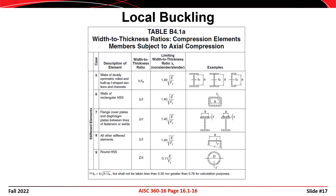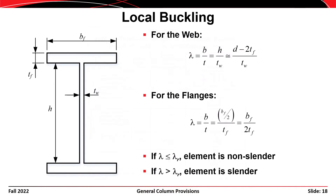The second half of the table gives lambda sub r limits for stiffened elements. For the web of an I-shape, lambda sub r is 1.49 times the square root of E divided by F sub y. We calculate lambda for each element, compare it to the limiting value from Table B4.1, and if non-slender we don't need to worry about local buckling — it may occur but only at a load higher than the section's yield strength. If slender, local buckling might occur before other modes or before yielding.